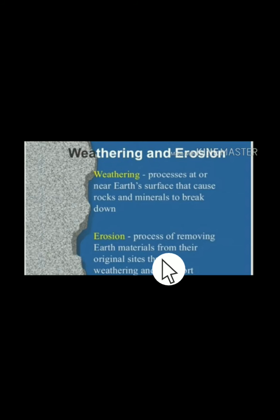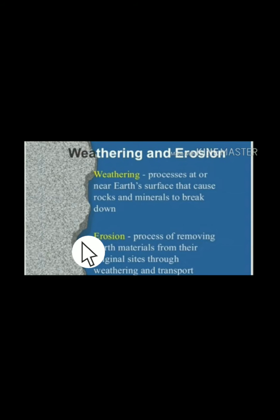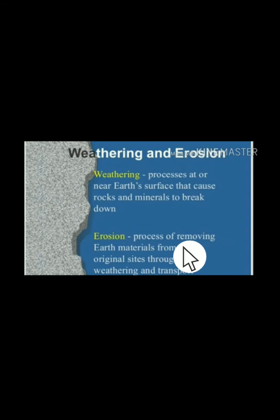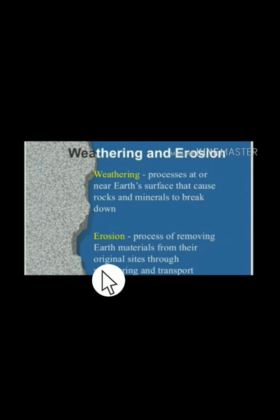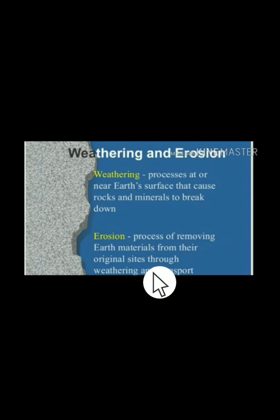Erosion is the process of removing earth materials from their original sites through weathering and transport. First, weathering occurs — a rock is broken. When a rock breaks, there are very small particles that fall near the rock. When there is heavy rainfall, these small particles are washed by running water and carried away from their original site. They are transported by either water or wind to a new place. For example, sand dunes: sand is eroded from one place to another by wind.